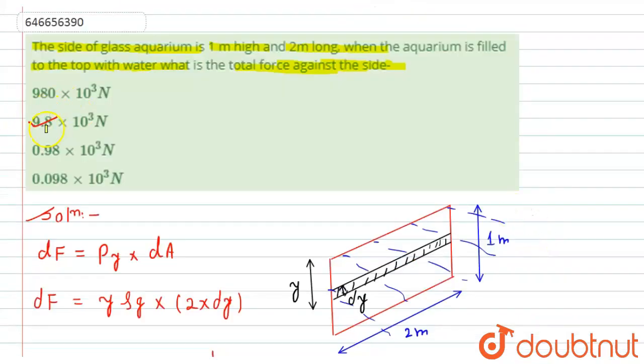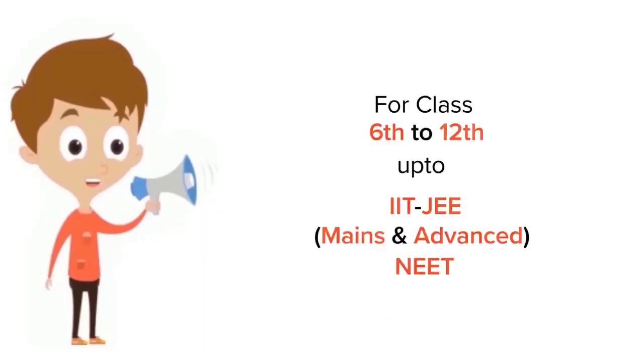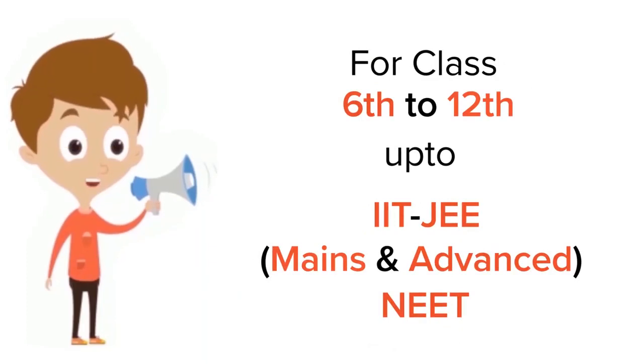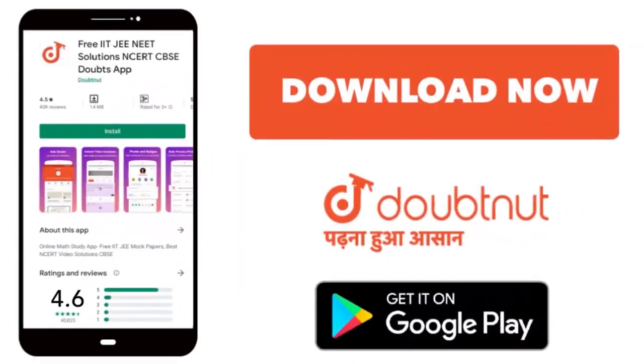The net force because of water on the wall of the aquarium will be 9.8 times 10 to the 3 newtons. So according to the options, option second will become the correct answer. So this is the required solution. Thank you.